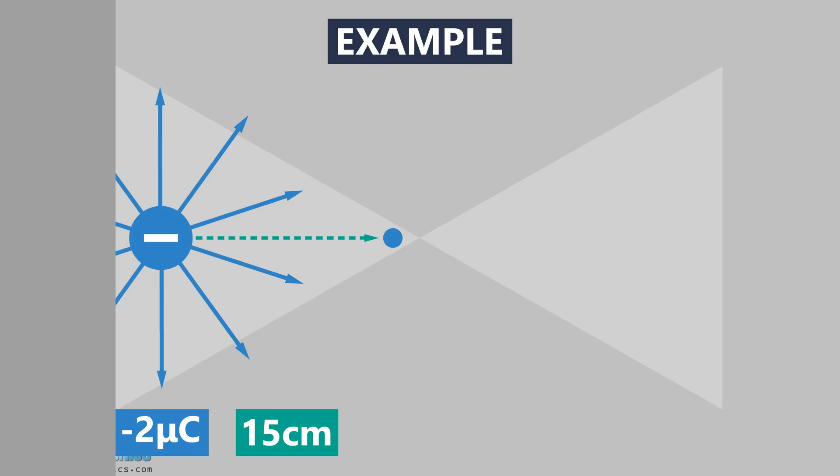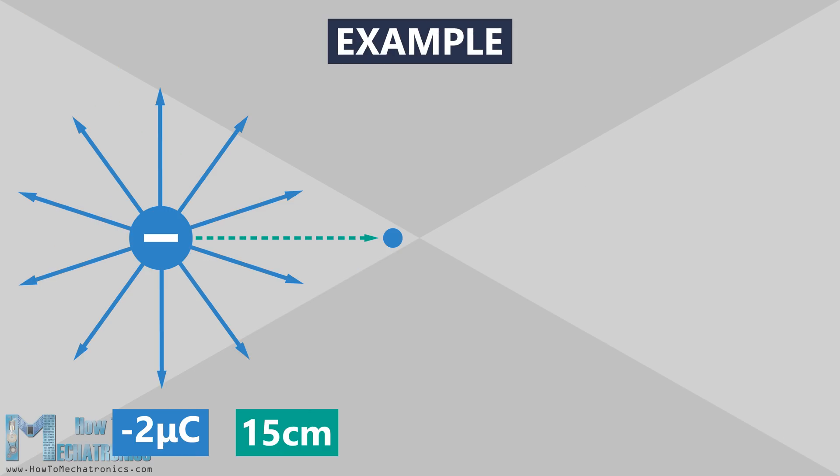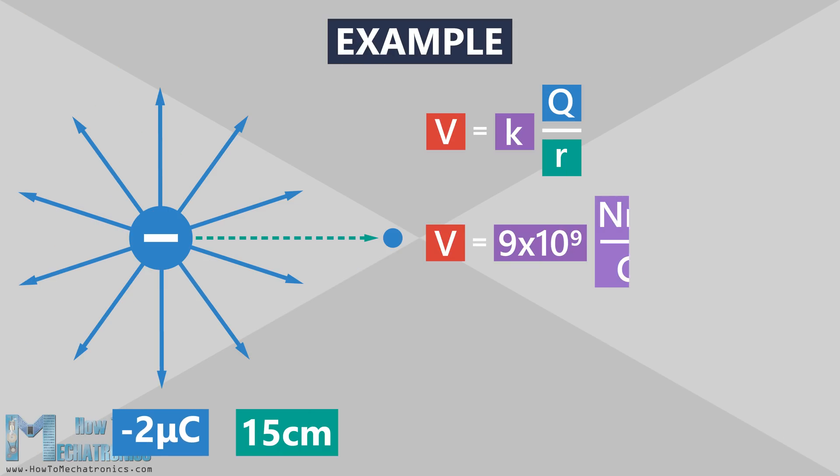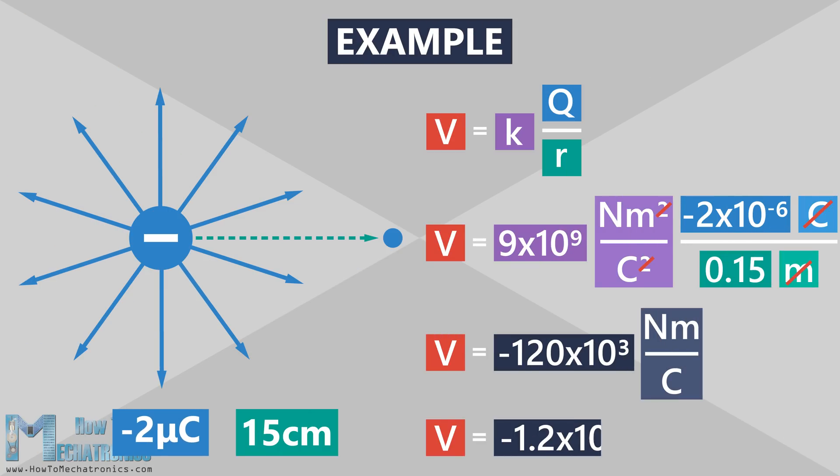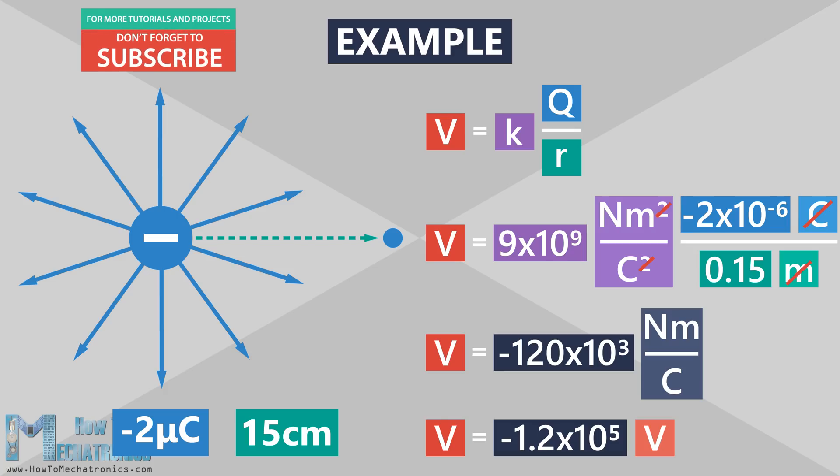In case we had a negative charge, let's say minus 2 microcoulombs, the electric potential at the same point would be minus 1.2 times 10 to the 5th volts. We would get the same value, but with a minus sign.